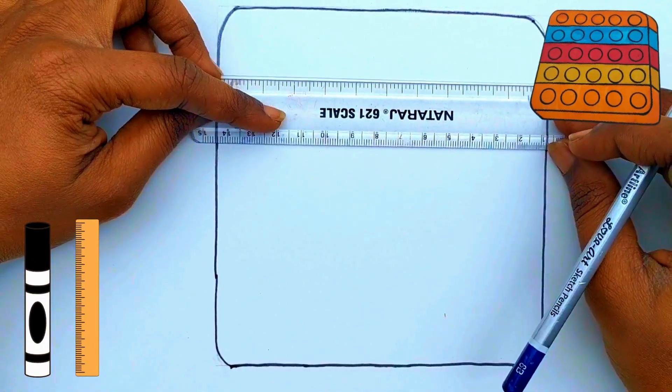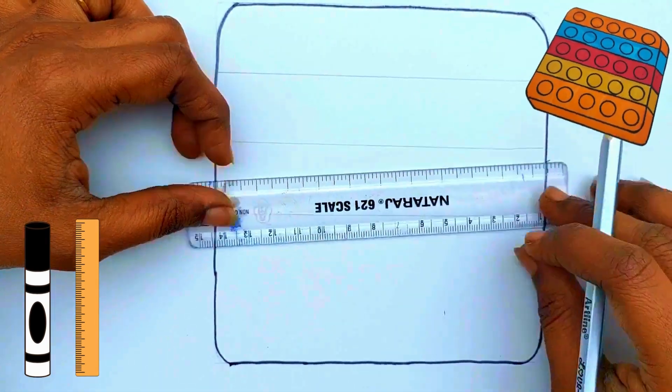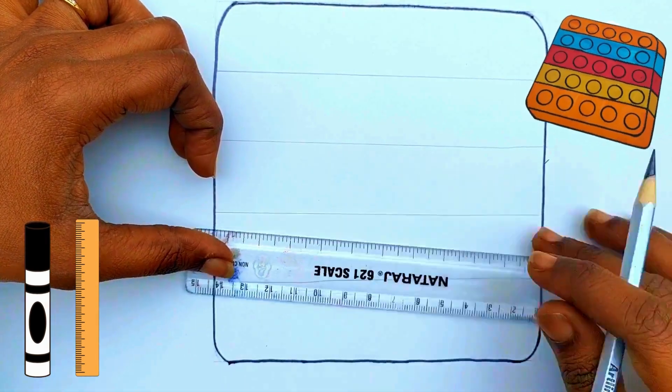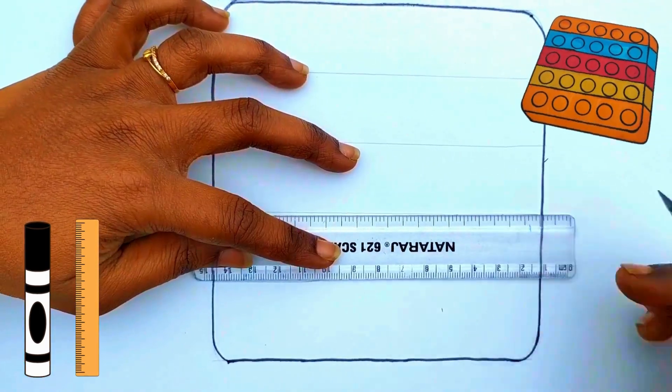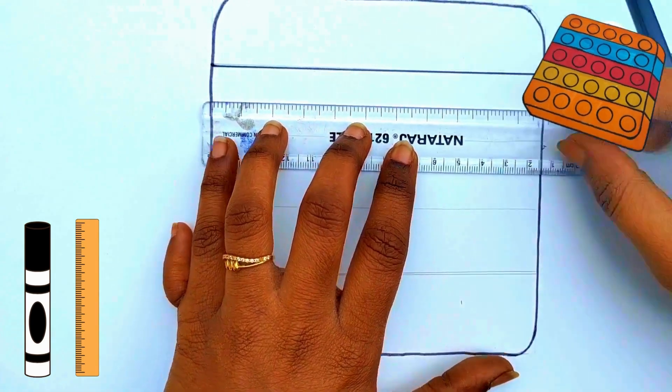Again use scale and pencil and draw sleeping lines. Highlight it with sketch again.